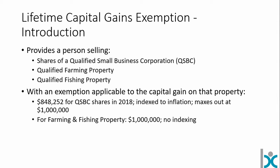The lifetime capital gains exemption gives a person — or a personal trust — selling shares of a qualified small business corporation, qualified farm property, or qualified fishing property a significant tax benefit on a gain on that property. With QSBC shares, it's an $848,252 exemption, and that amount is indexed to inflation. As the legislation is written right now, it will cap out at $1 million, though it would be surprising if nothing changes between now and when it reaches that level.